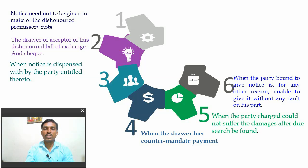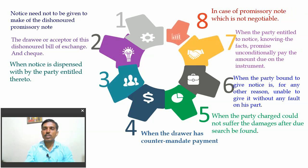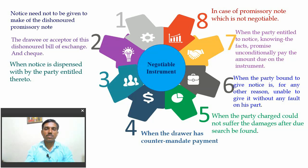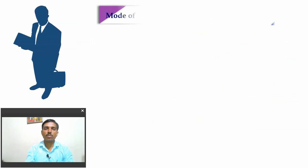When the due date is over because of any technical problem, it is not necessary to give notice. And when the party who initiated the notice knows the fact and promises unconditionally to pay the amount due on the instrument, notice is also not necessary. In the case of a promissory note which is not negotiable, notice of dishonor is not required. These are the situations where notice of dishonor is not necessary.